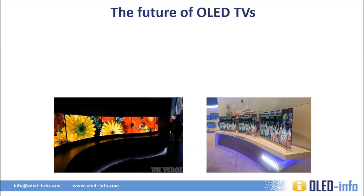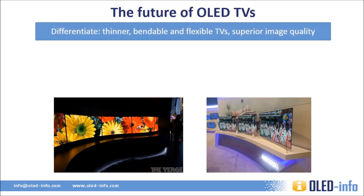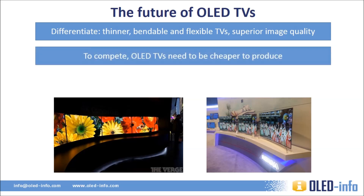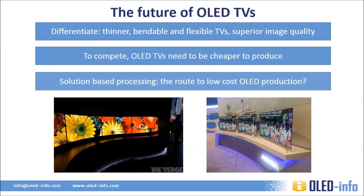Currently, it seems that OLEDs haven't really entered the TV market for real, even though LG Display is fully committed to the new technology. OLED TVs' major advantages include superior image quality, thin design, bendable and flexible panels, and a fast refresh rate. But this doesn't seem to be enough — to really compete in the large TV market, OLEDs need to be a lot cheaper. While increasing production capacity and improving the current evaporation process is a good way to lower production costs, a new process may be required altogether. Some believe that the best route to low-cost OLED production lies in solution-based processing, mainly inkjet printing. Thanks for listening — I hope you enjoyed this presentation. Goodbye.